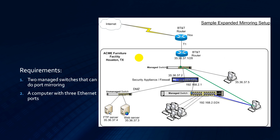The next setup is a little more complicated. Acme Furniture has spent some money on the IT budget and they've decided to host their own FTP and web server. They've created what we call a DMZ zone and hooked up these devices to a switch that is connected to the firewall. They've also decided to put a standalone PC hooked up to this switch so that the PC can serve the web without going through the firewall.